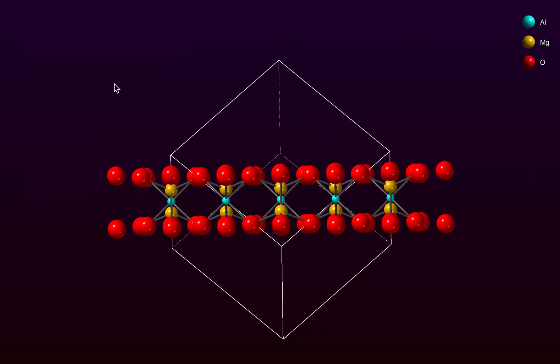Now we just have the selected atoms shown. I'm going to hide the unit cell. We have here our two layers of oxygen with the metal atoms in between.